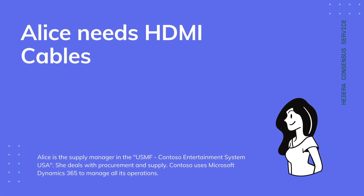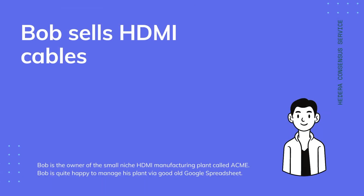In our example, Alice is the supply manager for USMF Contoso Entertainment Systems USA. She deals with supply and procurement. USMF Contoso uses Microsoft Dynamics 365 to manage all of its operations. Bob is the owner of a small HDMI cable manufacturing plant called Acme. The scale of Bob's company does not require a more sophisticated system than a spreadsheet.